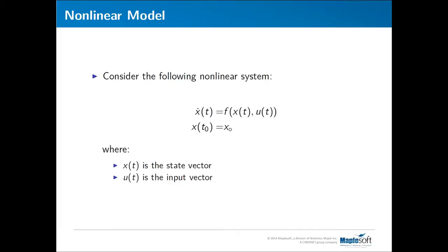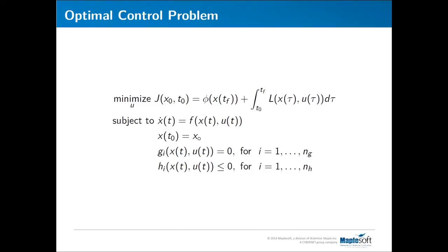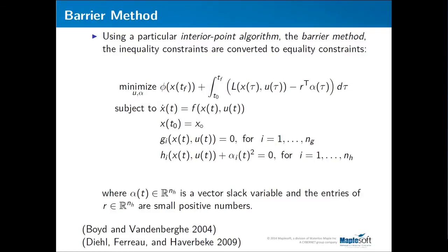Consider a nonlinear dynamic system with x as the state vector and u as the input vector, and an optimal control problem where we want to minimize a cost function that is a function of the final state plus the effect of the trajectory from initial time to final time. The constraints for this optimization problem are the system's dynamic equations, plus a set of equality constraints defined by G_i as a function of states and inputs, and a set of inequality constraints on states and inputs defined by H_i.